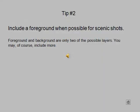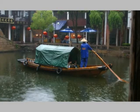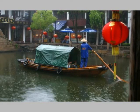Tip number two: include a foreground when possible for scenic shots. Foreground and background are only two of the possible layers — you may, of course, include more. This picture is nice. This picture is nicer.